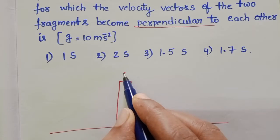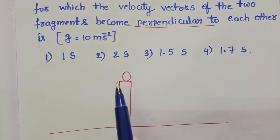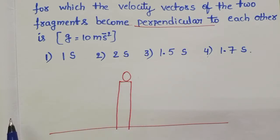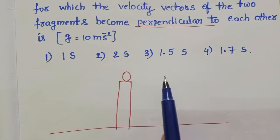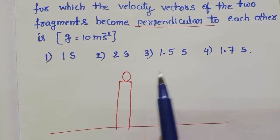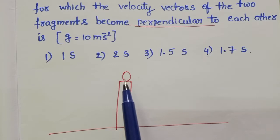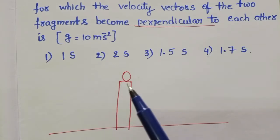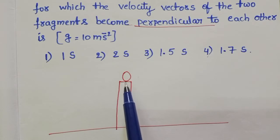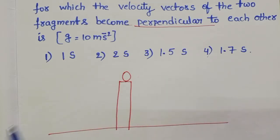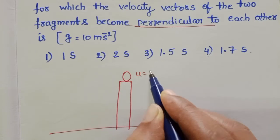A body is at rest at a certain height, and it explodes into two equal fragments. One of the fragments receives a horizontal velocity of 10 meters per second. There is no external force acting on this body, so by using the law of conservation of momentum, the total momentum before explosion equals the total momentum after explosion. Initially, this body is at rest.